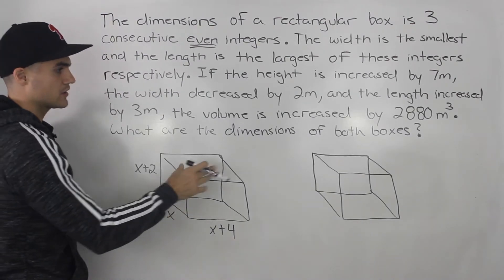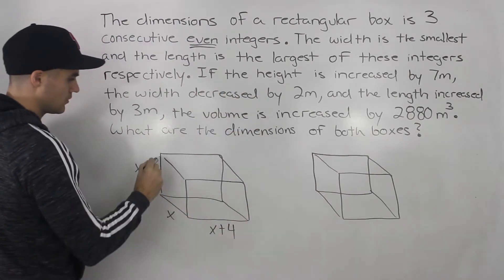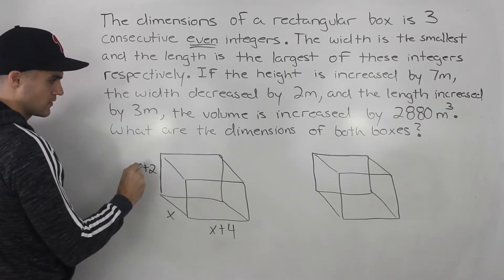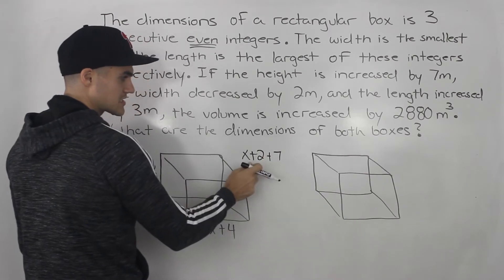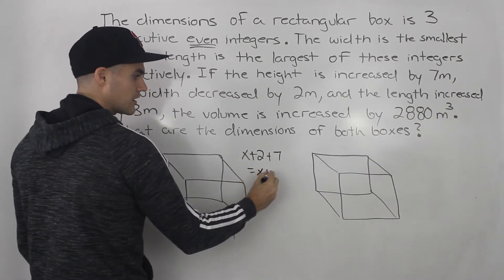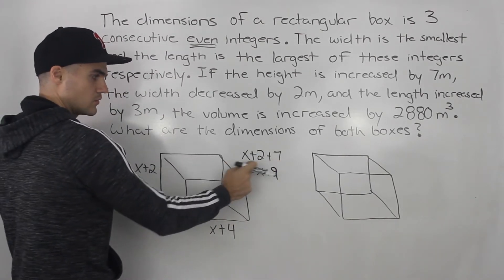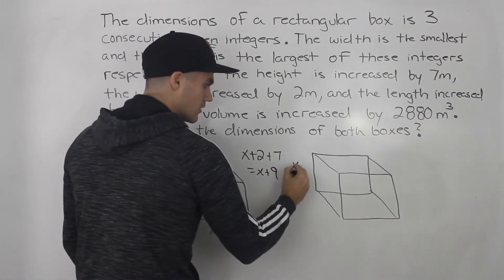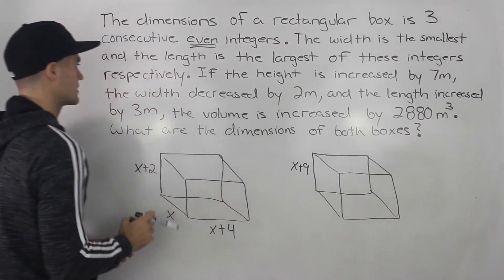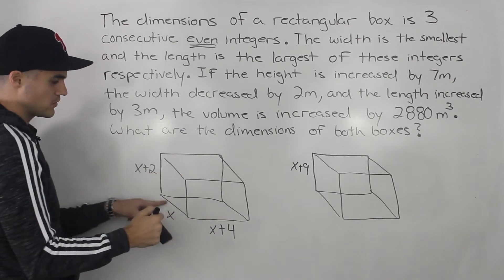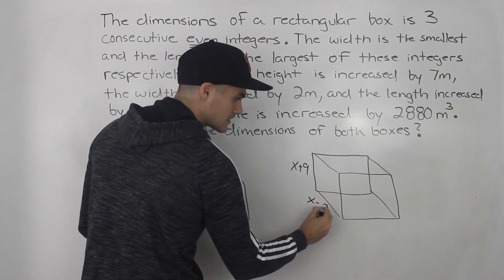Now the question says we're going to create a new box. The height is increased by seven meters. Since the current height is x plus 2, increasing it by seven gives us a new height expression of x plus 9. The width is decreased by two meters, and the current width is x, so the new width will be x minus 2.